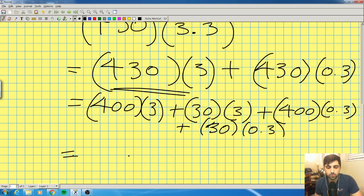So what is 400 times 3? If I don't know what 400 times 3 is, no problem. I know what 4 times 3 is, right? 4 times 3 is 12. So how do I get 400 times 3? You just tack on two zeros. So it's going to be 1,200, okay?